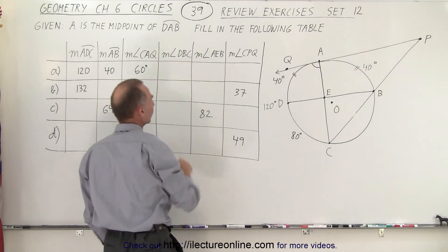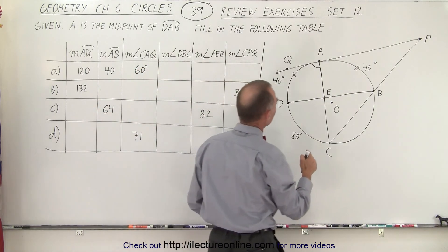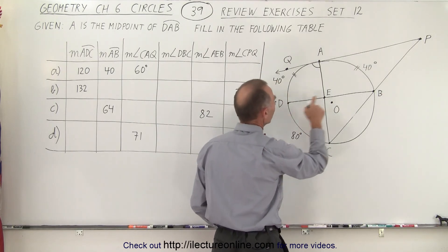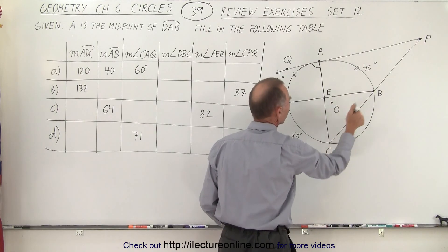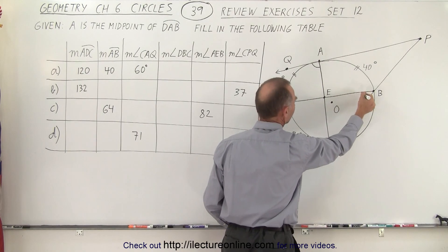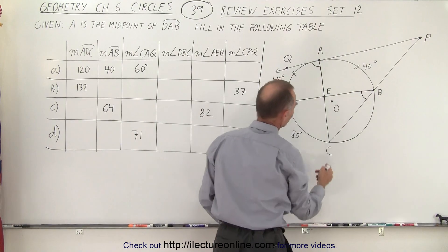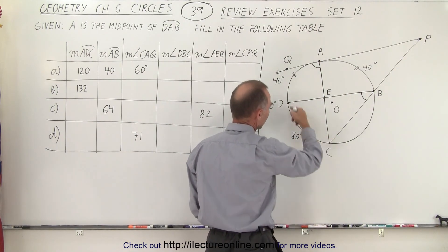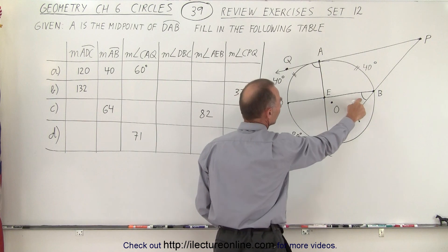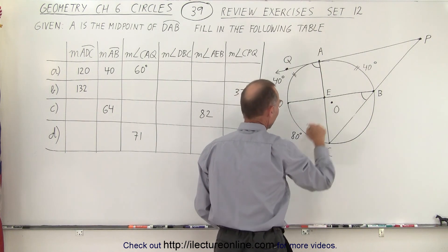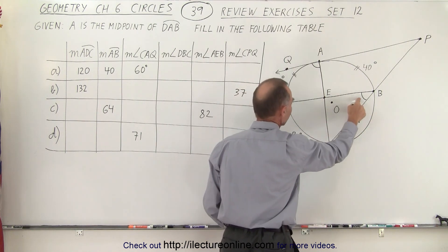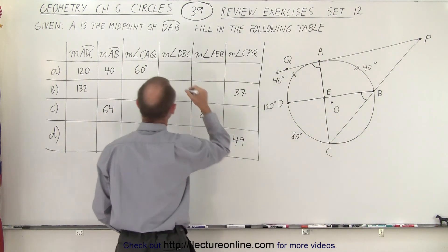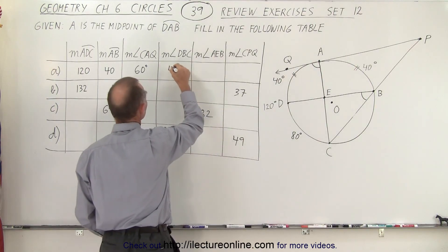The measure from D to B to C — that's this angle right here. Notice we know this arc length right here is 80 degrees. This must be half that, therefore the measure for that angle would be 40 degrees.